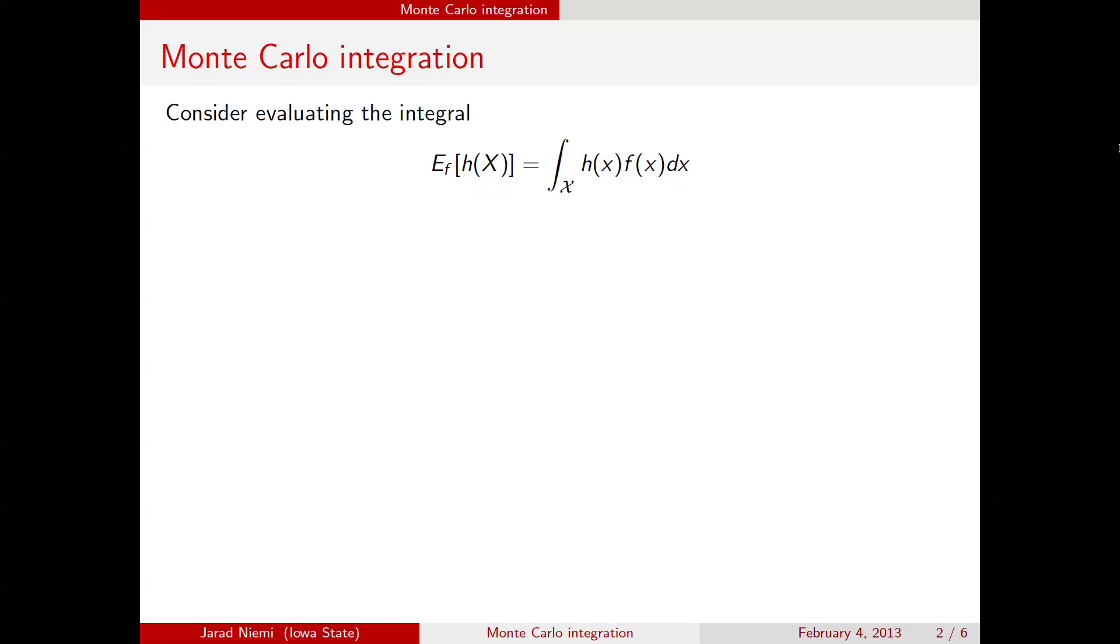The idea behind Monte Carlo integration is that if you're trying to evaluate an integral of this form, so for those familiar with regular integrals, the right side might look familiar where you just have some integral over some domain of x, and here we've split it up into two functions, a function h of x and f of x. For the moment, you could think of that as just a single function of x. We're going to cast it in some statistical notation here, where we actually are calculating the expectation under the density f of the function h of the random variable x.